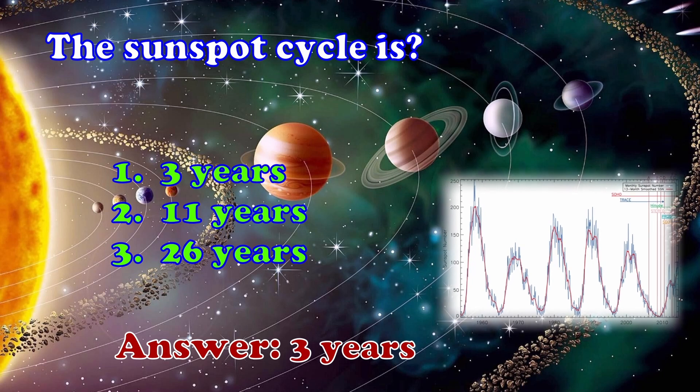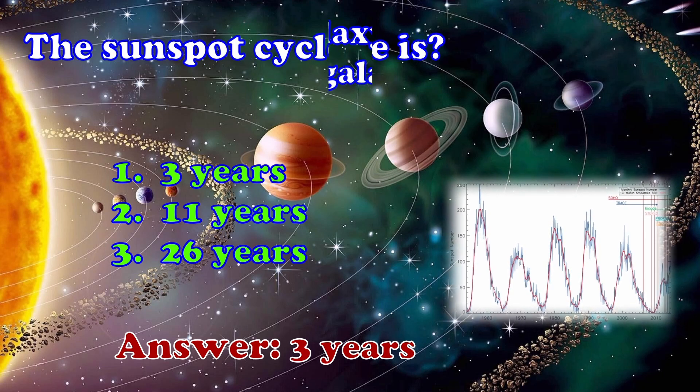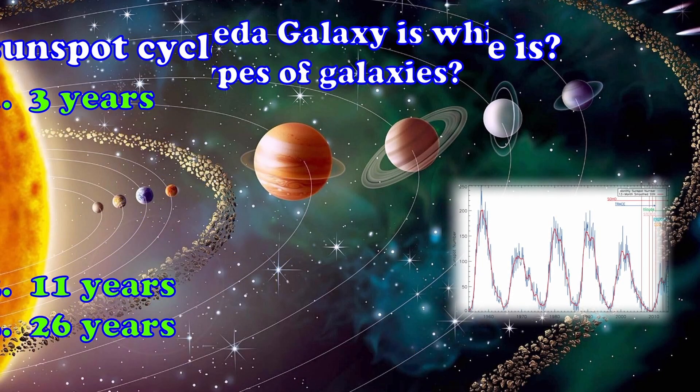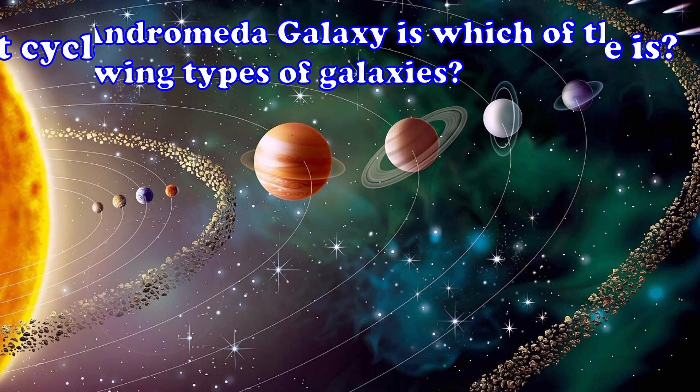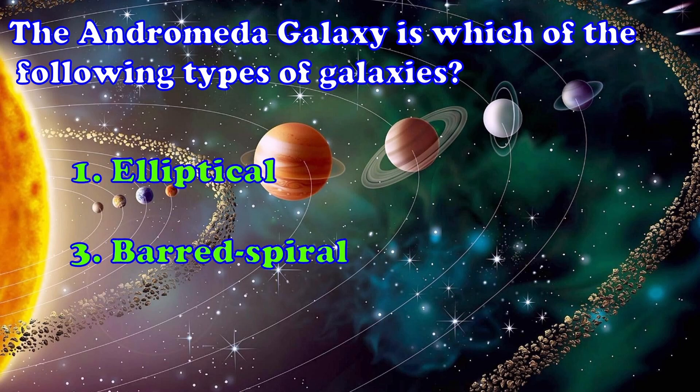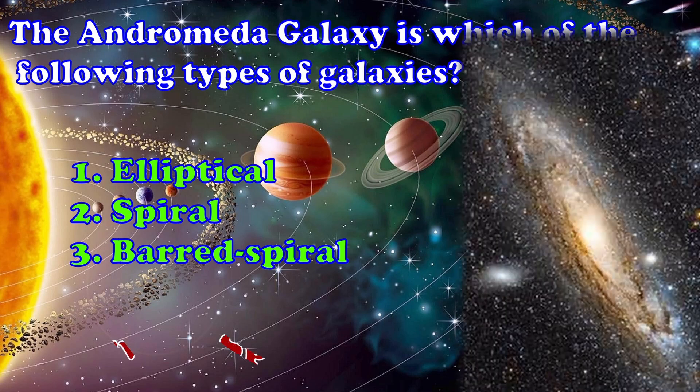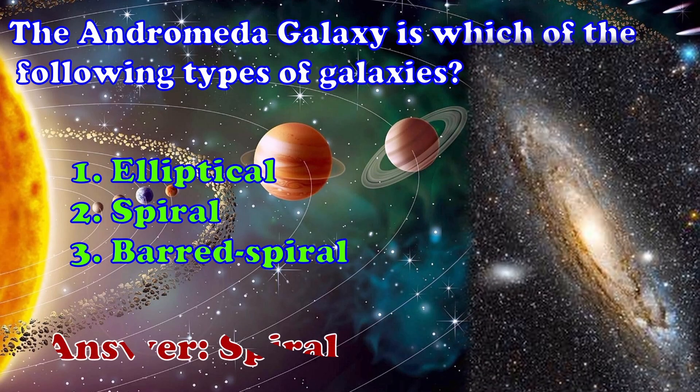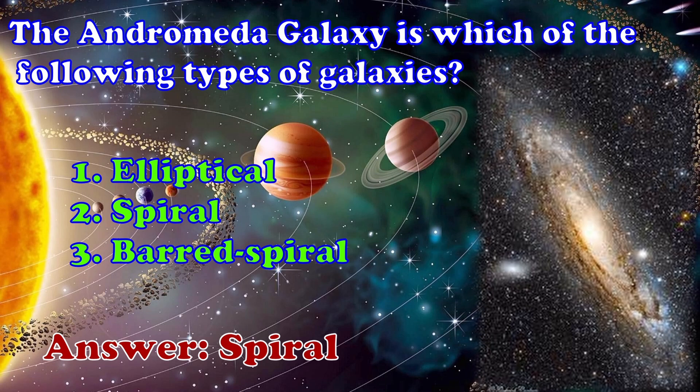The Andromeda Galaxy is which of the following types of galaxies? 1. Elliptical 2. Spiral 3. Barred Spiral. The answer is spiral.